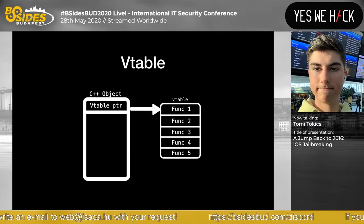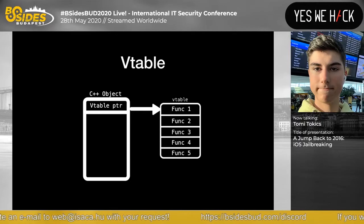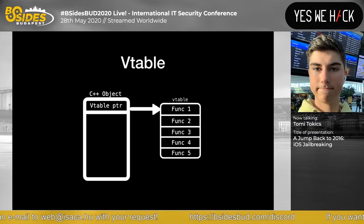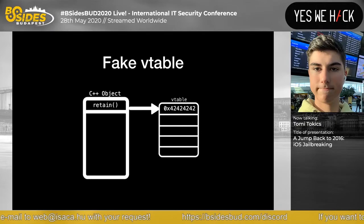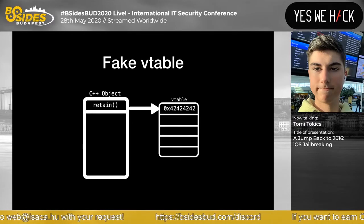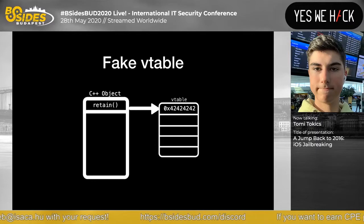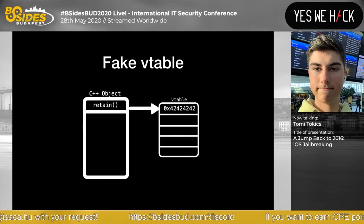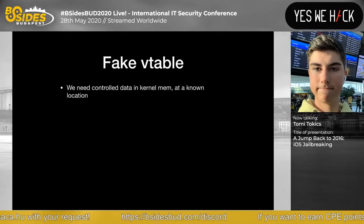To control the program counter we need to craft a fake vtable. The vtable pointer points to the vtable where function pointers live. We craft a fake vtable where instead of retain, we point to our malicious copy — the fake vtable can hold any value. We place 0xDEADBEEF there for the record. To pull this off we need controlled data in kernel memory at a known location.